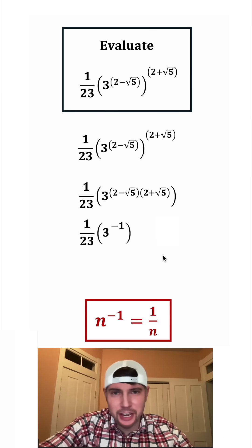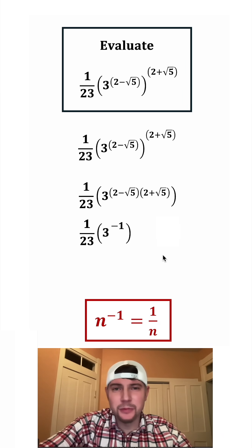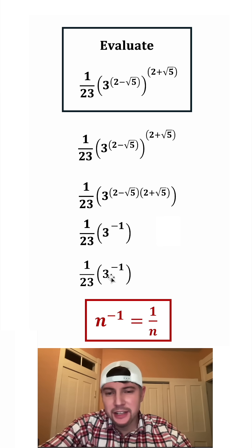Next, let's use these notes for negative exponents. N to the negative 1 means 1 over N. So the 3 to the negative 1 is going to become 1 over 3.